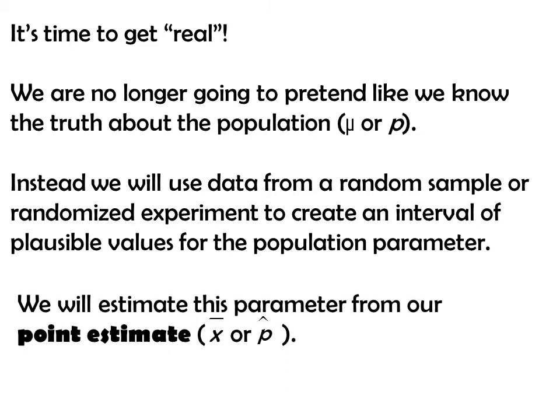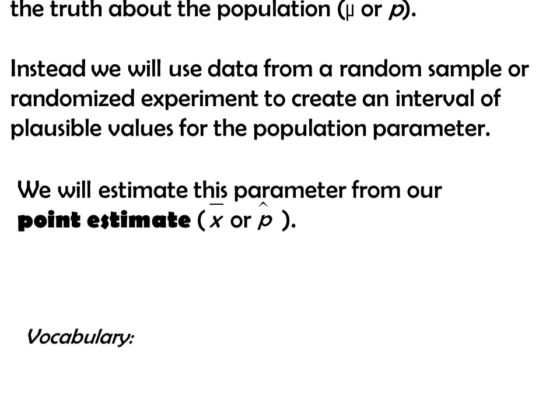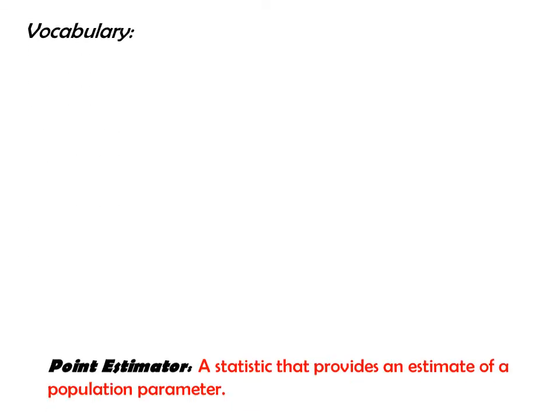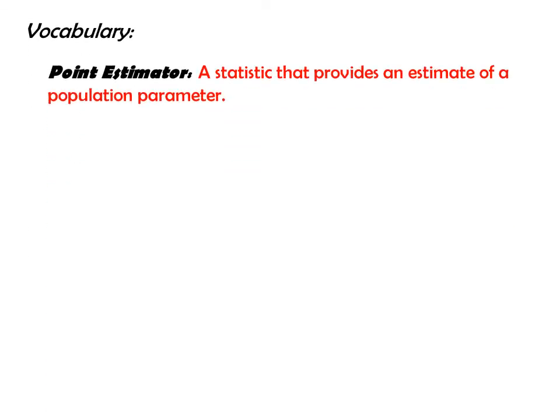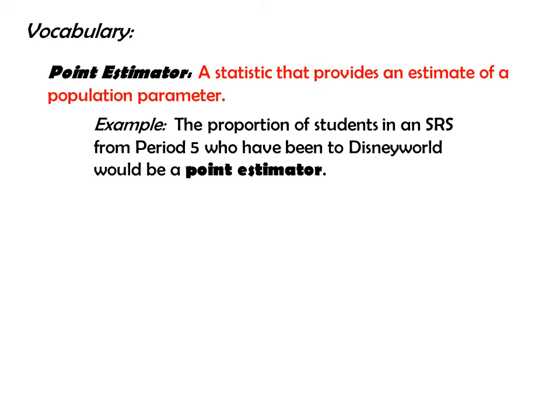We will estimate this parameter from our point estimate x-bar or p-hat. Some important vocab: the first one is point estimator. This is a statistic that provides an estimate of a population parameter. For example, the proportion of students in an SRS from period 5 who have been to Disney World would be a point estimator.